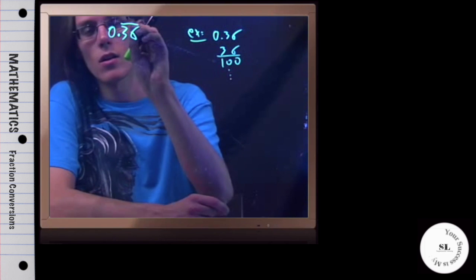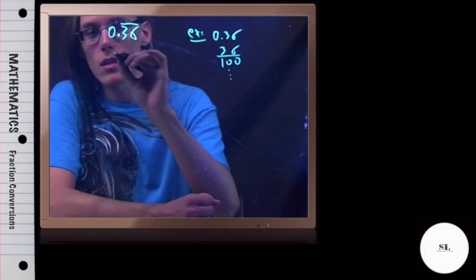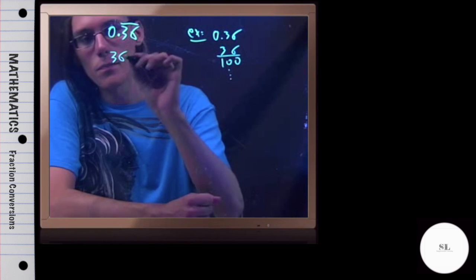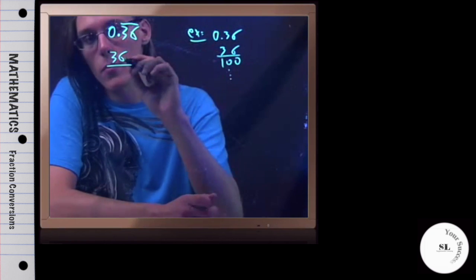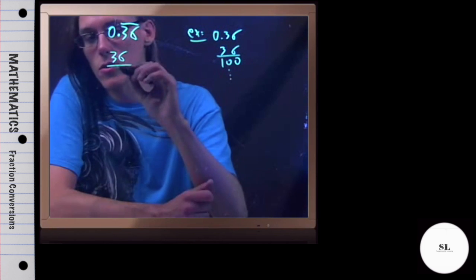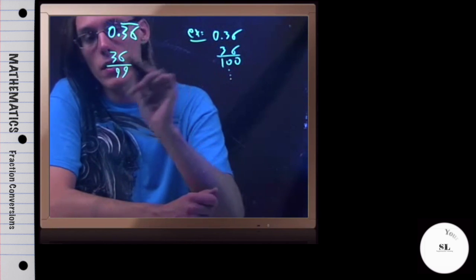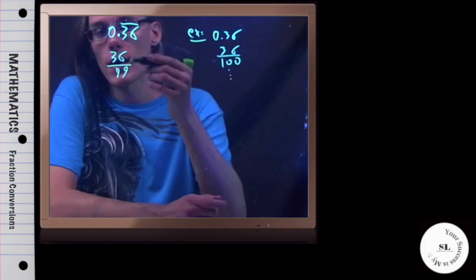But this continues on forever. So the trick here is that I still do 3, 6 in the numerator, but then instead of dividing by 100, 1 with 2 zeros, I'm going to divide by this many 9s. So 9, 9, and I had two decimal places, so that's it. I'm going to divide by 99.